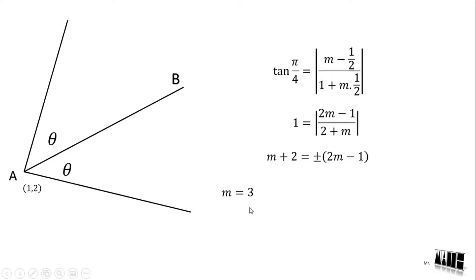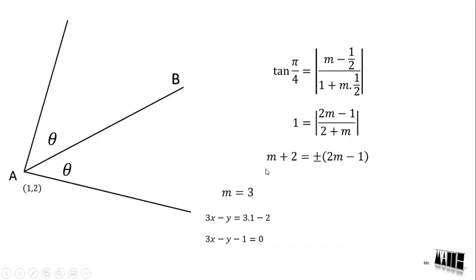So with m equal to 3: 3x minus 1 into y is equal to 3. Therefore, 3x minus y minus 1 is equal to 0. For the other case, minus 2m is equal to 3m, so m is equal to minus 1 over 3.